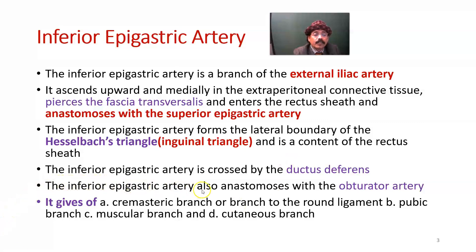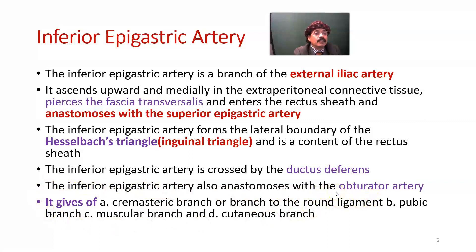The inferior epigastric artery is crossed by the ductus deferens. It also anastomoses with the obturator artery, which is very important. In a significant number of patients, the anastomotic channel between the inferior epigastric artery and the obturator artery is very large — this is called the accessory obturator artery, which may be damaged during surgery in that area. The obturator artery usually comes from the internal iliac artery, but it may also receive significant blood supply from or even originate from the inferior epigastric artery.